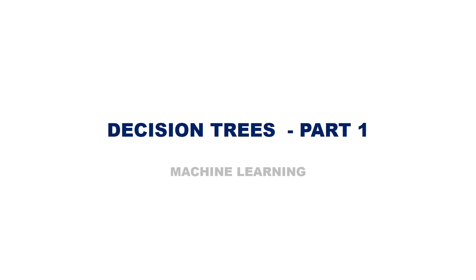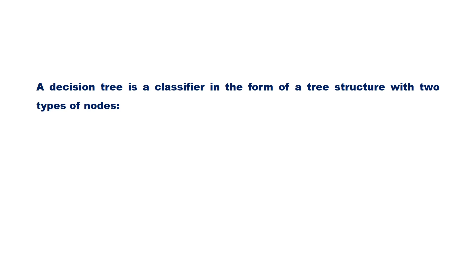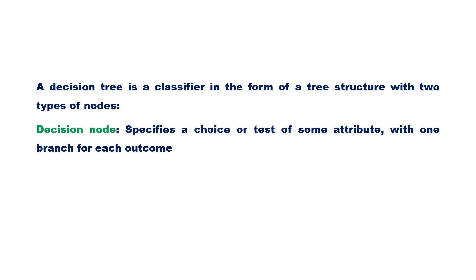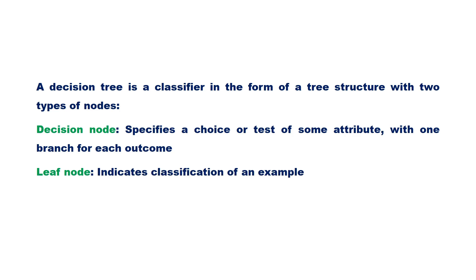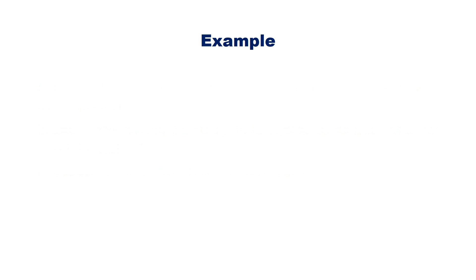In this video we will discuss about decision trees. A decision tree is a classifier in the form of a tree structure with two types of nodes: decision nodes, which specify a choice or test of some attribute with one branch for each outcome, and leaf nodes that indicate classification of an example.